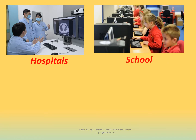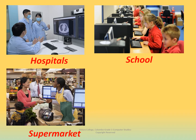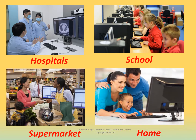Schools: you all know where computers are used at school. They are mainly used in the computer lab for students to use them for their education. Supermarket: computers are used in supermarkets to issue bills. Home: why do we use computers at home? To do homework, to watch movies, to play games — you can use it for many purposes.